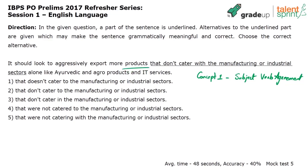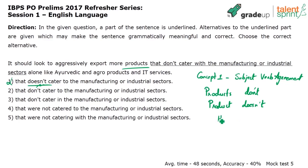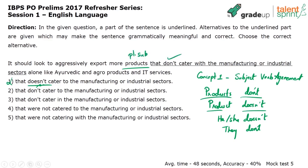What's the subject here? Products. We're talking about more than one product — a plural subject. Products don't. Product, singular subject, doesn't. This is the first concept pertaining to subject-verb agreement. Those of you who came back and said option one, I have to eliminate option one because it has 'doesn't.' Applying concept one — subject-verb agreement — I can safely eliminate option one because it says 'doesn't.' He, she doesn't. They don't. That's why: products don't, product doesn't. Here I have products, plural subject, so I need 'don't' only.